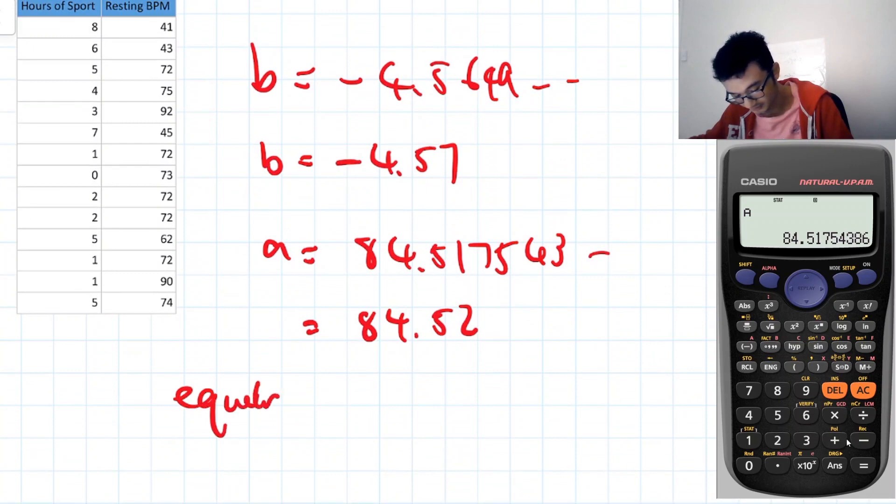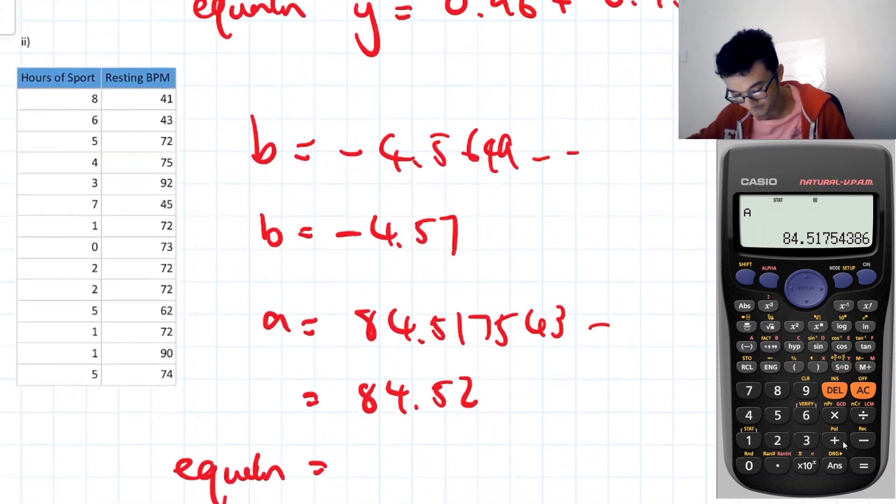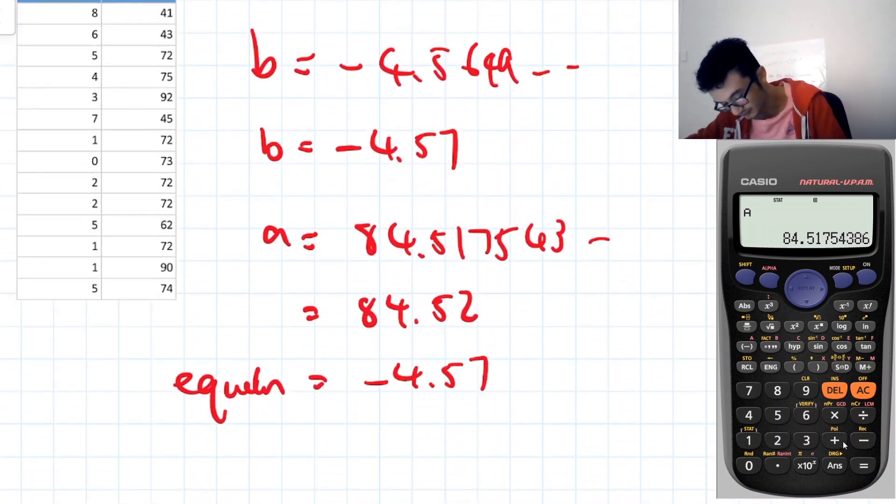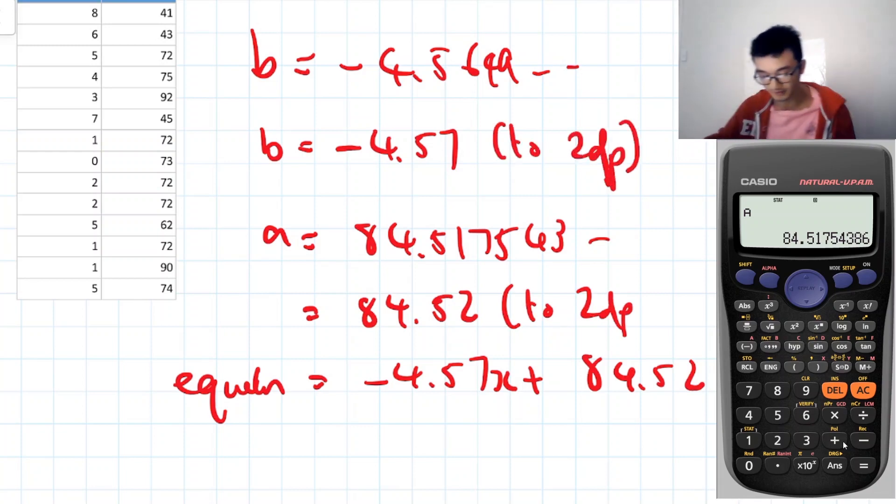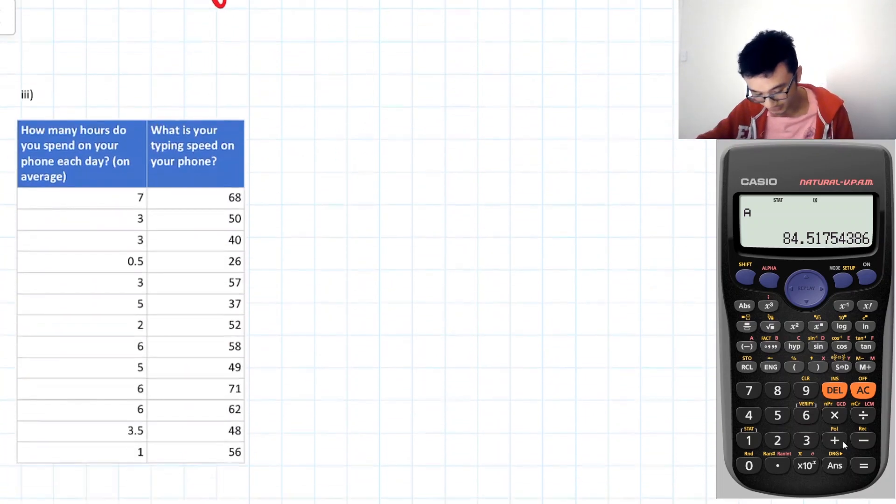Okay. So our equation will be Y equals BX plus A. So that's negative 4.57X plus 84.52. These were two decimal places, by the way, as well. One thing I'll note there is that you'll notice that the gradient can be negative in this case, and it can be pretty high values as well. And that's because it's not the same as the correlation coefficient. It's just using that in the calculation. So it's okay if it's beyond negative one and one.